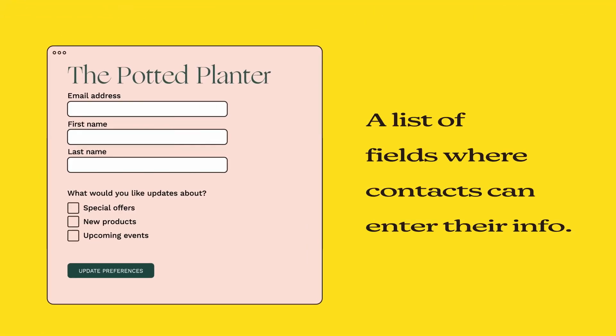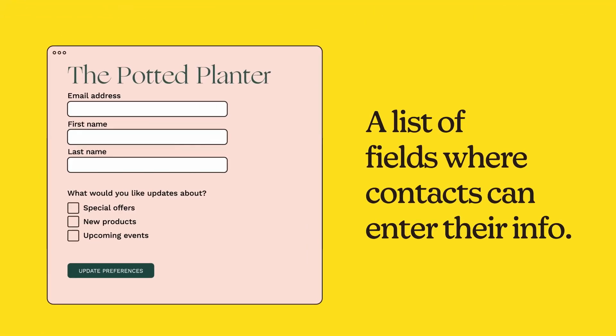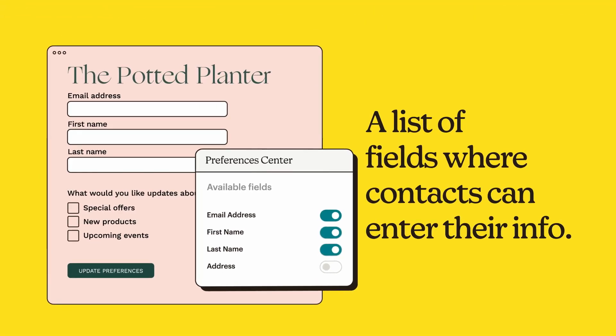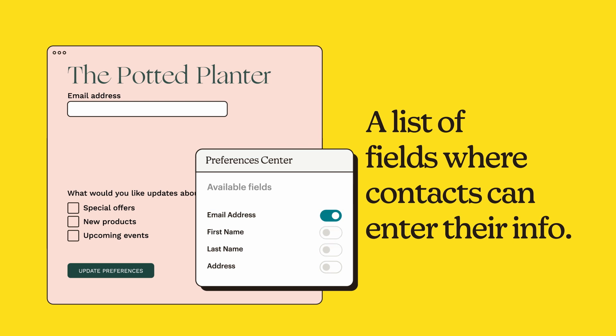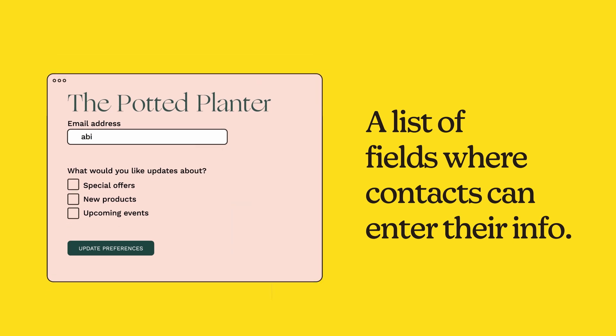So, what is a signup form? Basically, a form is a list of fields where your contacts enter their information, such as their email address. The process is kind of like filling out a mailing address so that the right package gets delivered to the right person. That tells you what signup forms are, but why would you use them? In short, these forms offer a powerful way to extend the reach of your email marketing.